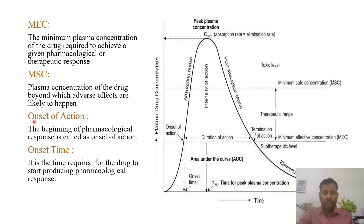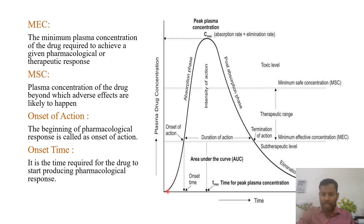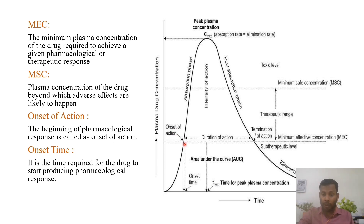Now, onset of action: the beginning of pharmacological response is called onset of action. This point is onset of action. See — below this there will be no drug action because it is below MEC level. Once the drug in plasma reaches the MEC level, from that point only drug will start showing its action. Hence this point is onset of action.